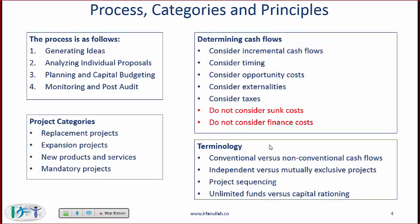Let's start with capital budgeting. Capital budgeting is the process that companies use to decide which projects to do and which projects not to do. The process involves: generating ideas, analyzing various proposals, planning and capital budgeting — deciding on particular projects — then monitoring those projects, and finally a post-audit review after the project to see whether it went as expected. Project categories include replacement projects, expansion projects, new products and services, or mandatory projects.